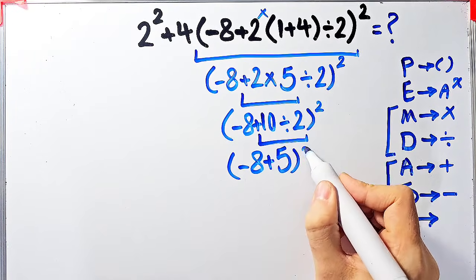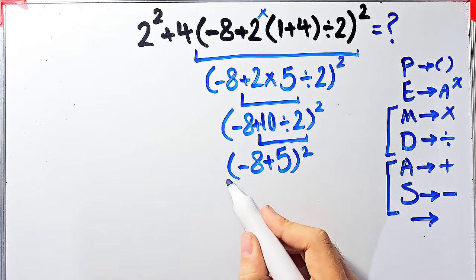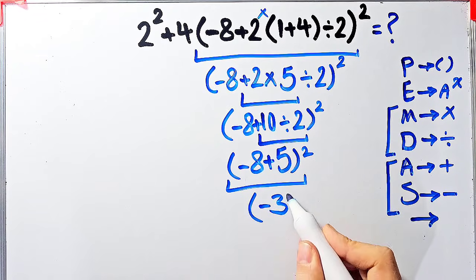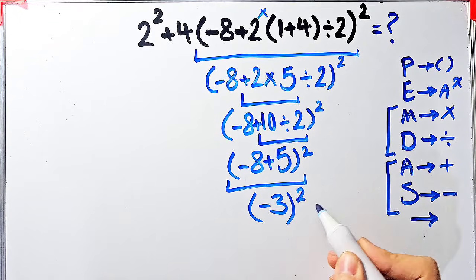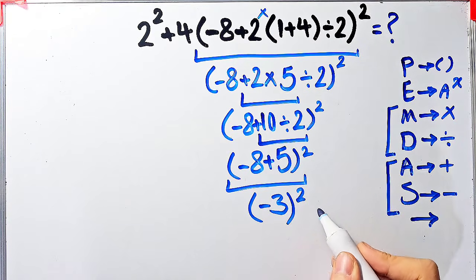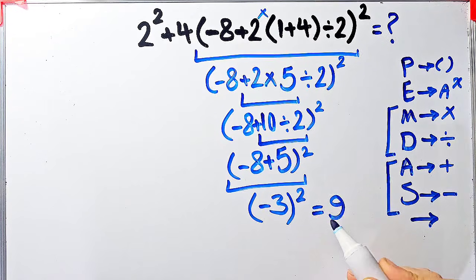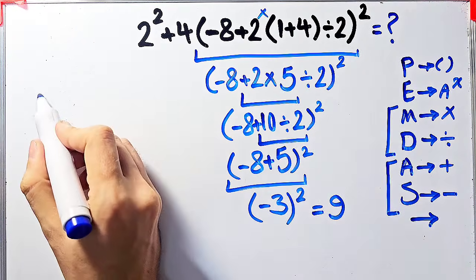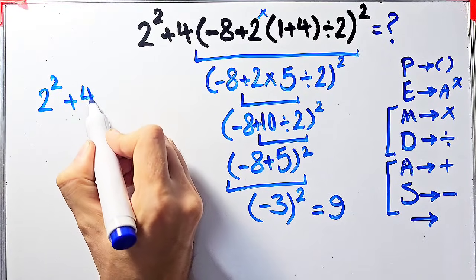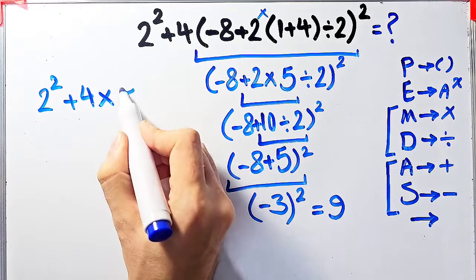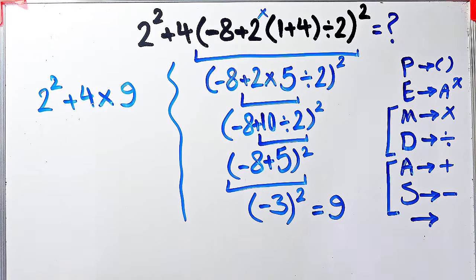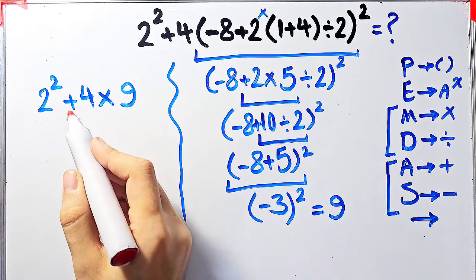Now we have negative 8 plus 5 inside the parentheses. Negative 8 plus 5 equals negative 3. Now we have negative 3 to the power of 2. Negative 3 to the power of 2 equals 9. The final answer of these parentheses equals 9. Now the question is: 2 to the power of 2, plus 4, then times 9.